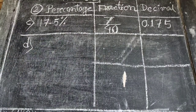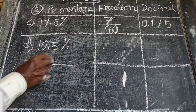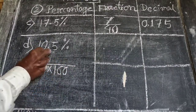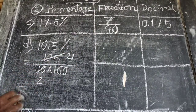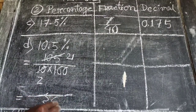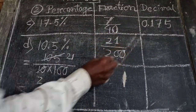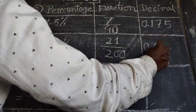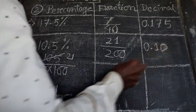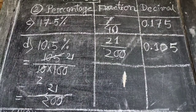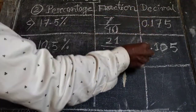(d) 10.5 percent — we write it as 105 by 1000, then divide. After cancelling by 5, we get 21 by 200. So the fraction is 21 by 200. For the decimal, 10.5 divided by 100 equals 0.105.